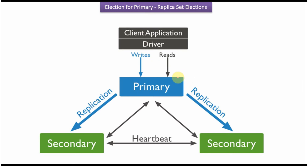Suppose due to some issue this primary server goes down. In that scenario, the eligible secondary server will call for an election. The eligible nodes will vote, and whichever secondary server gets the most votes will become the primary server. The process of selecting a new primary server is called election.